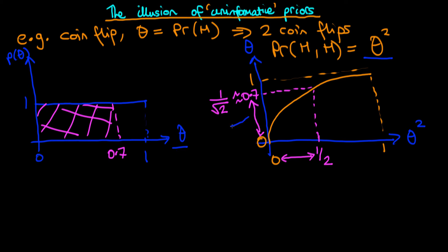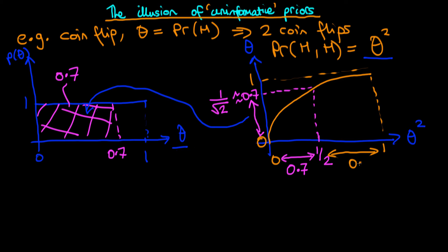We can mark off the 0.71 point on our original diagram and see that the probability mass corresponding to theta being between zero and 0.71 corresponds to a shaded area. Because we have a uniform prior, this area is approximately equal to 0.71. So the area under the probability distribution for theta squared between zero and a half must also be roughly 0.71, which means the remaining area between a half and one corresponds to something like 0.3.